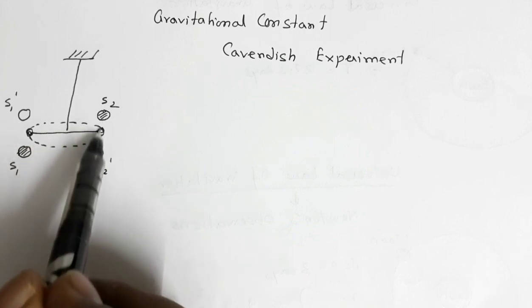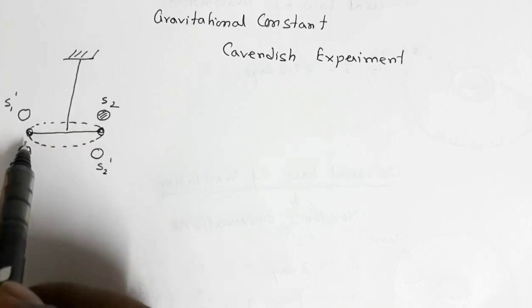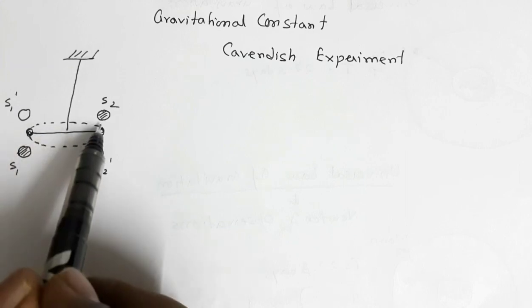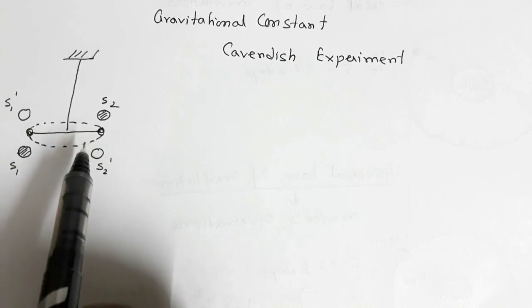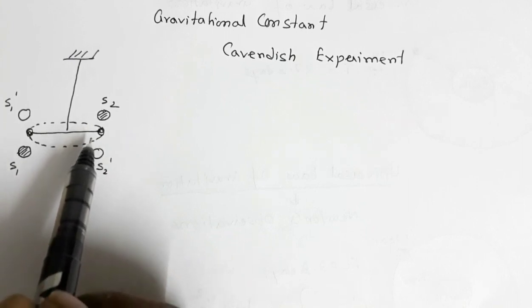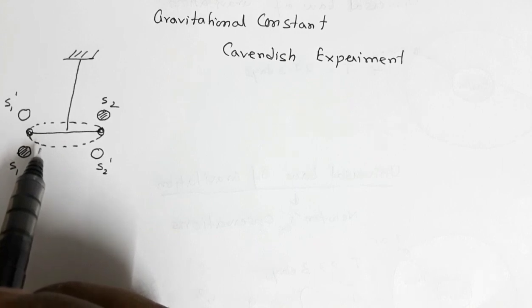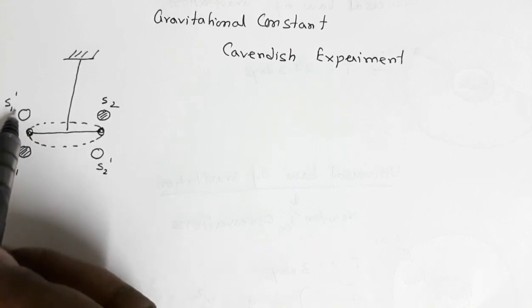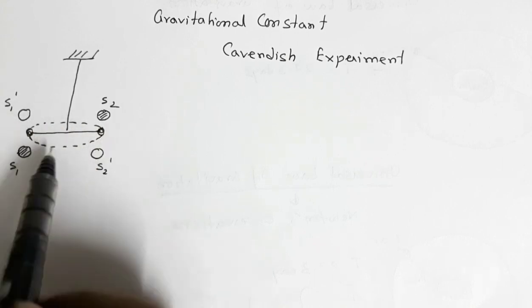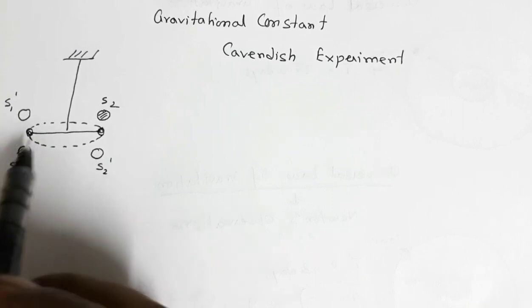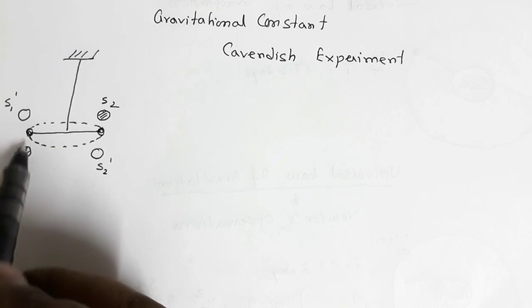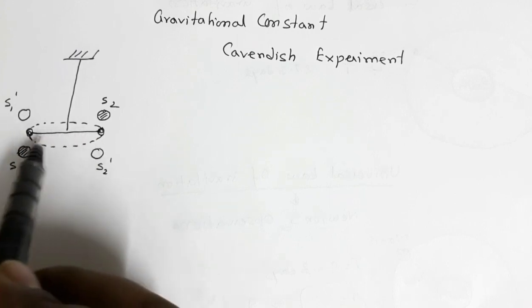There was a force of attraction between each large sphere and its nearby small sphere. The force between one pair and the force between the other pair were equal in magnitude and opposite in direction, so the net force on the system was zero, but there was a net torque. The large spheres were then switched to the opposite sides, the force was measured again, and the torque was calculated. The torque is simply the gravitational force multiplied by the length of the rod.